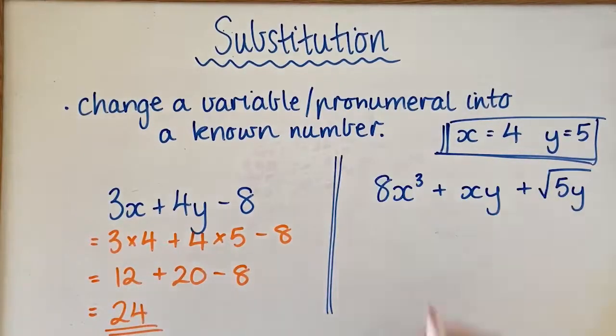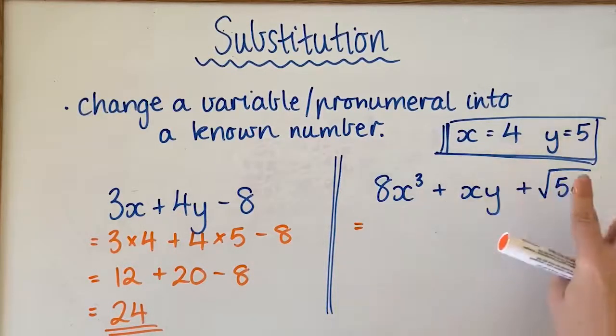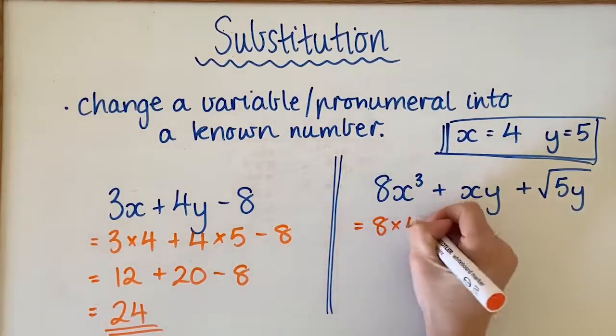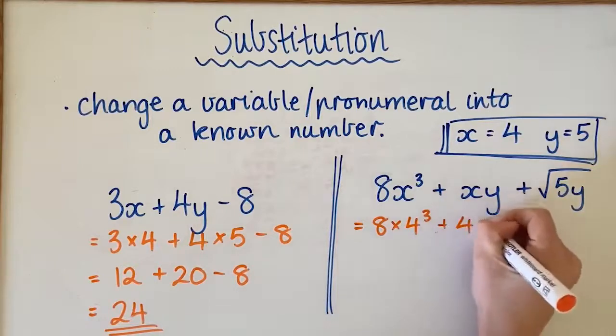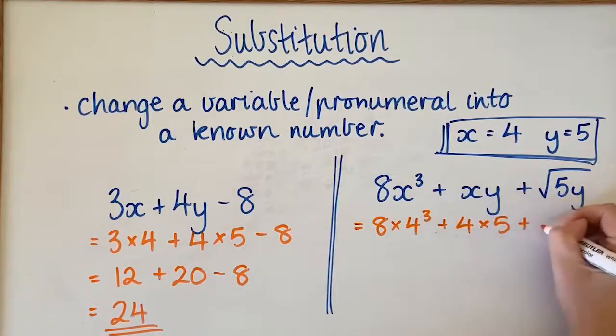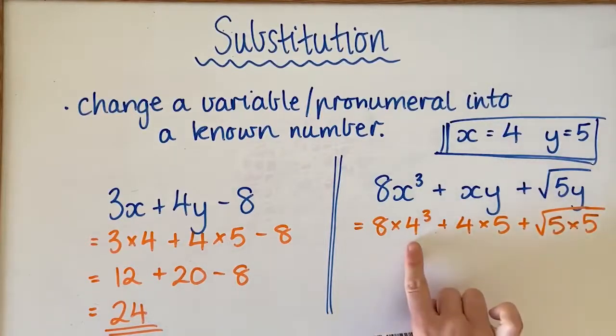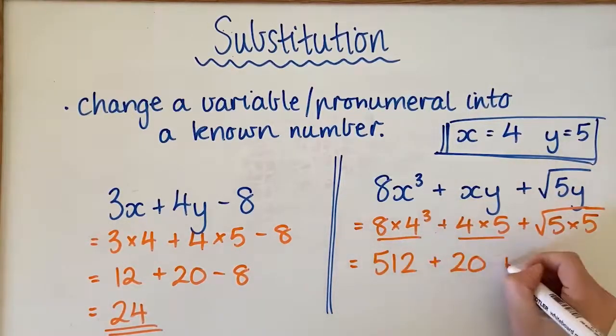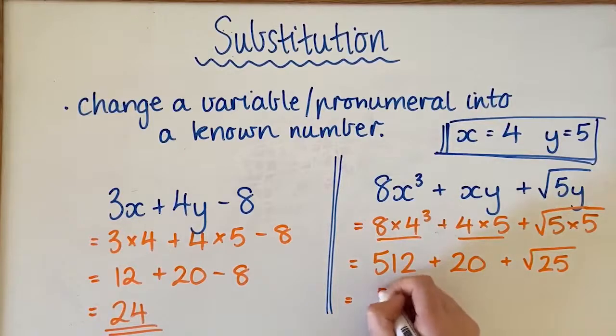You might get even a more complicated one. The same process still applies. You just change your pronumerals into the given number. So we get 8 times 4 to the power of 3 plus 4 times 5 plus the square root of 5 times 5. I've changed my x to a 4 in both situations, and my y to a 5 in both situations. Then it's just a matter of working out each individual component.